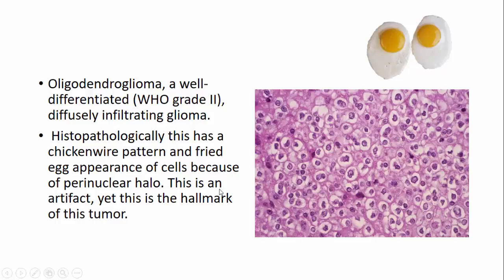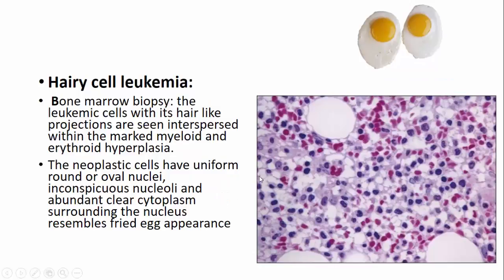This perinuclear halo is an artifact but is the hallmark of this tumor. Another entity which looks like a fried egg is hairy cell leukemia in bone marrow biopsy. The leukemic cells with hair-like projections are seen interspersed within marked myeloid and erythroid hypoplasia. These neoplastic cells have round or oval nuclei, inconspicuous nucleoli, and abundant clear cytoplasm surrounding the nucleus, resembling a fried egg appearance.